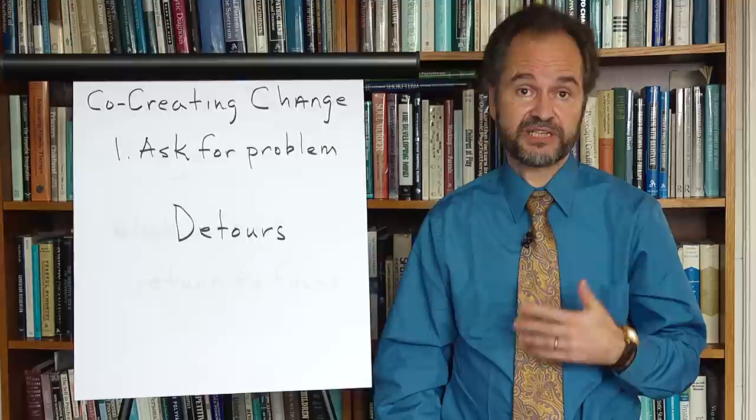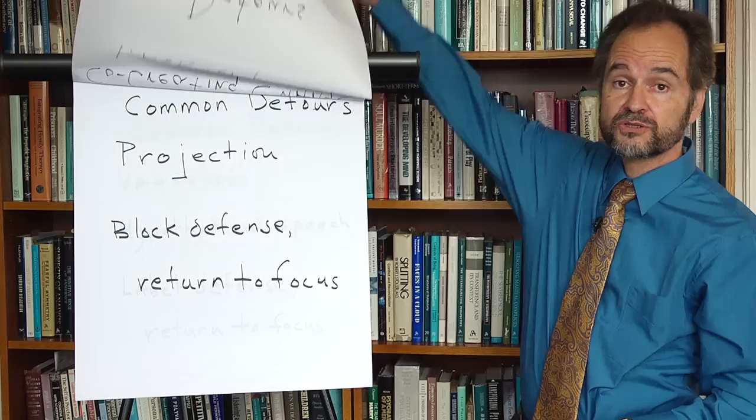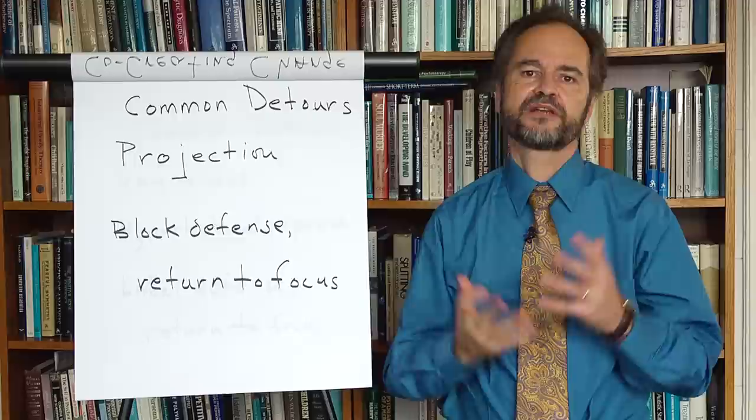So to co-create that relationship for change, first we have to find out what his problem is, for which he seeks help, and we have to help him see and turn against defenses that could defeat his efforts. So let's take a look at a few common defenses patients use to avoid declaring what they want help with. When you ask the patient what he'd like your help with, he may answer, you should ask my wife.